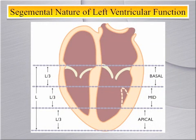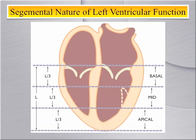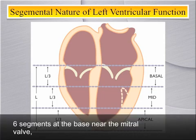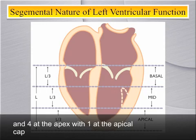It is useful to divide the heart into multiple segments for the purpose of analyzing ventricular function. Based on AHA and SCA guidelines, a 17-segment model is used. The heart is roughly divided into thirds from base to apex. Because the ventricle is not round but rather bullet-shaped, there are differences in chamber size at differing levels. By convention, there are six segments at the base near the mitral valve, six at the mid-papillary level, four at the apex, and one at the apical cap.